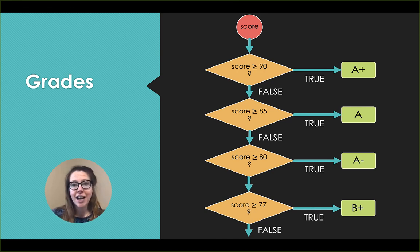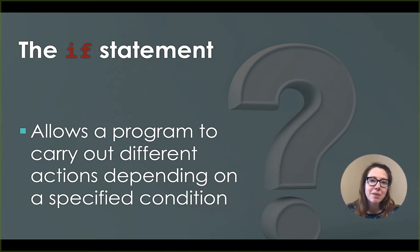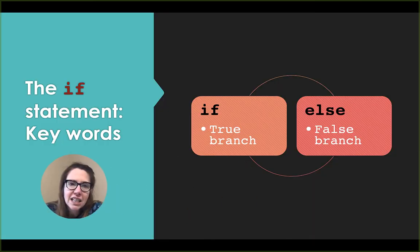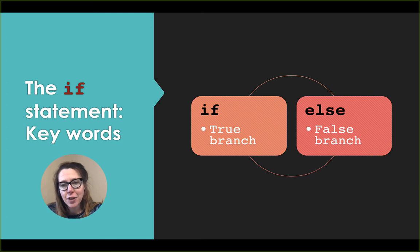If the score is greater than or equal to 85, it's an A; if not, we carry on down the line. The if statement allows a program to carry out different actions depending on a specific condition — that Boolean condition is what defines our path. There are two keywords in the if statement: if and else. Statements following if guide us to the true branch; those following else lead us on the false branch.